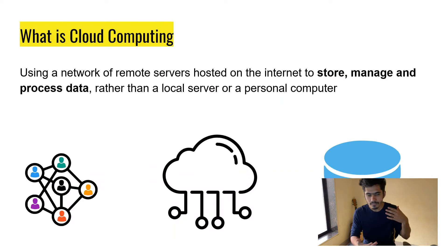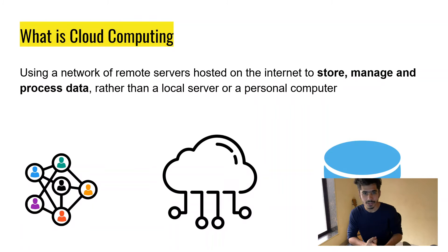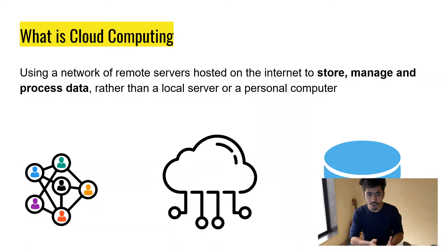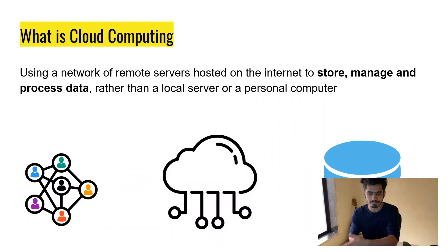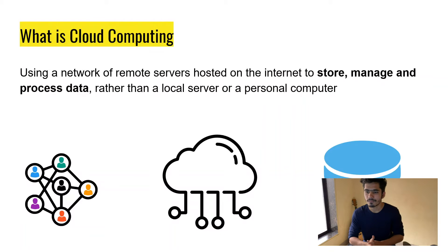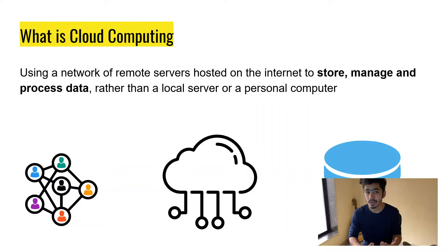In our data warehouse series so far, we used our local servers for everything. We created our Postgres server, loaded data into it, created databases and tables — everything was on a single machine. We also wrote Python code to transform data on our local computer. But that was small data. When the database keeps growing, it becomes really difficult to process that amount of data on a local computer because it has set limitations.